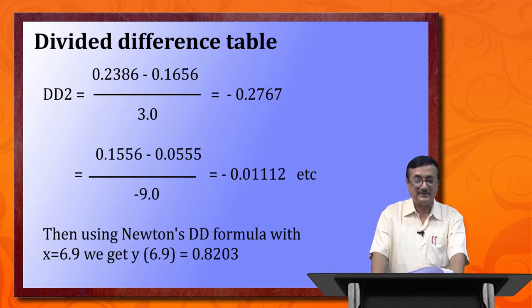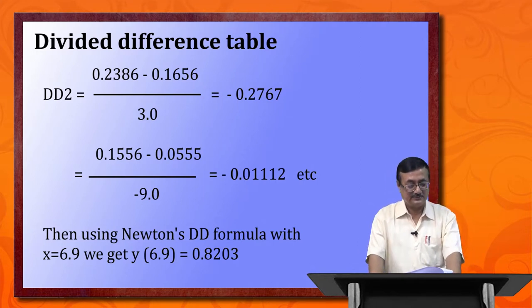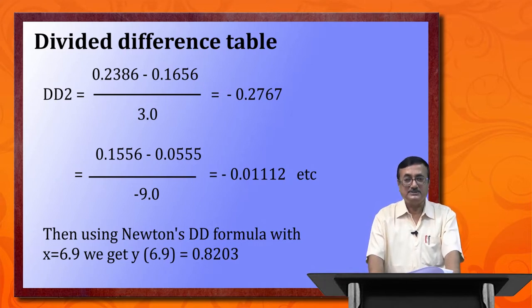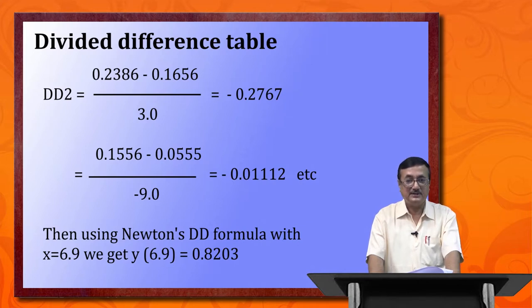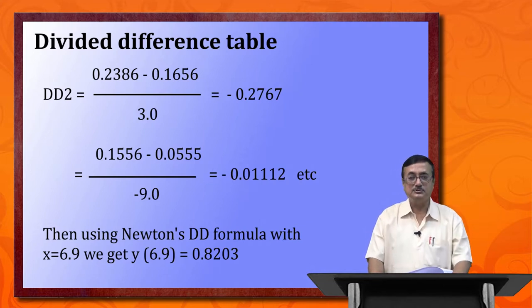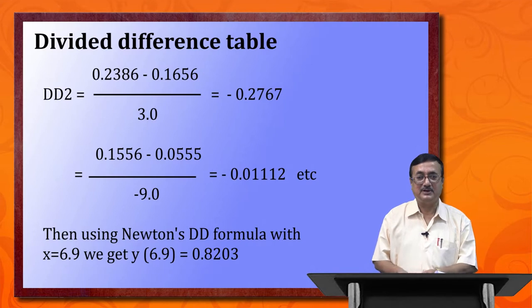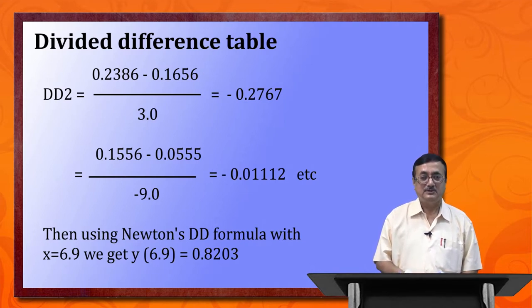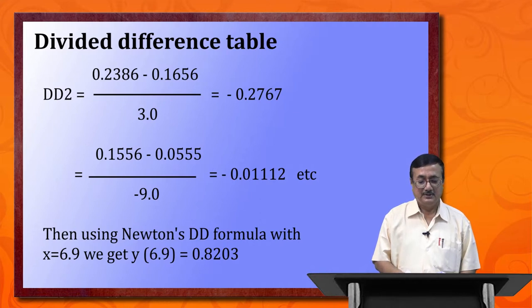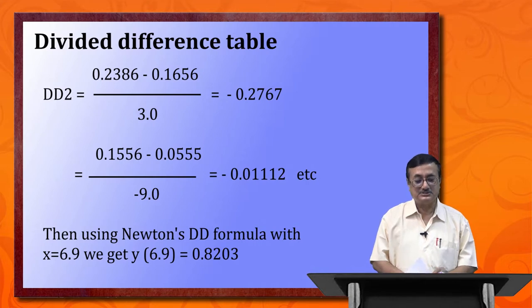Similarly, the other second order divided differences are computed. Then, using the final expression for Newton's divided difference formula with x equals 6.9, we get y(6.9). The computation gives the final result as 0.8203. This is how we can determine the value of y at an arbitrary point x within the given region of interest using Newton's divided difference formula.